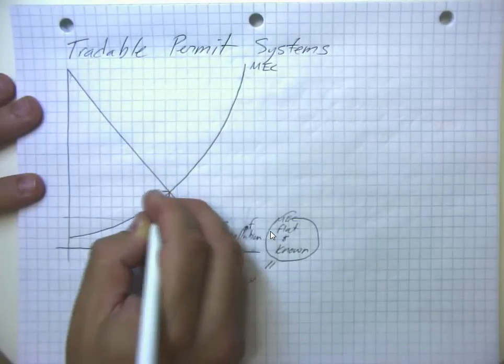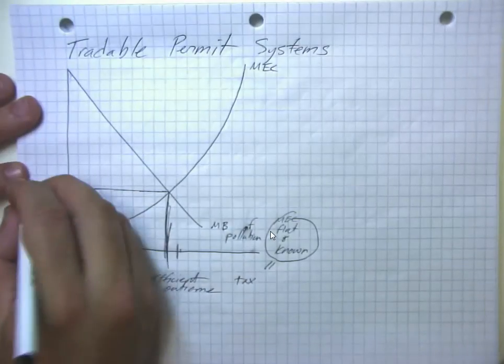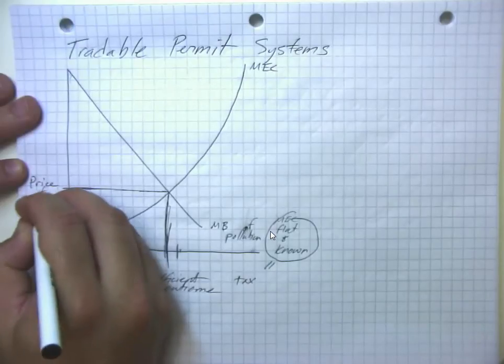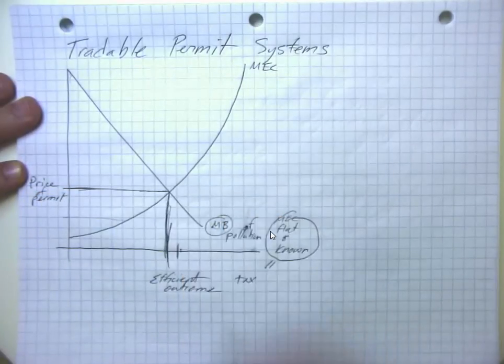And we can see that the permits will trade for this amount here. Because remember, this curve here, the marginal benefit of pollution curve,